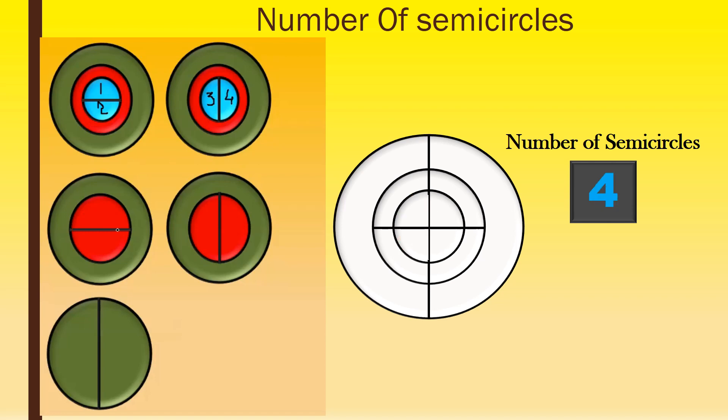Next, by this diameter line we got the semicircle five, six. And by this diameter line we got two more semicircles, seven and eight. Next, two more semicircles, nine and ten. Total ten semicircles.